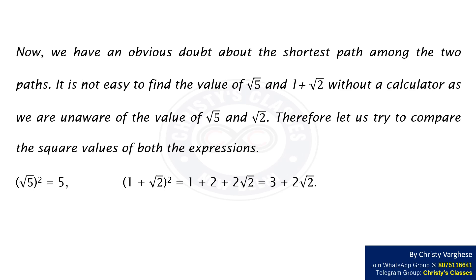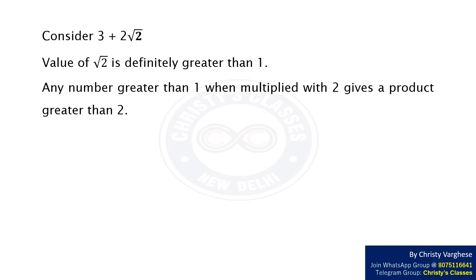(√5)² equals 5. (1 + √2)² equals 1 + 2 + 2√2 which equals 3 + 2√2. Now let us analyze logically whether 3 + 2√2 is greater than 5 or not. Consider 3 + 2√2. The value of √2 is definitely greater than 1. Any number greater than 1 when multiplied with 2 gives a product greater than 2. 3 added to a number greater than 2 gives a sum greater than 5.